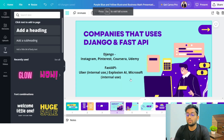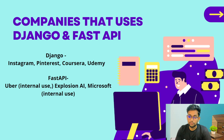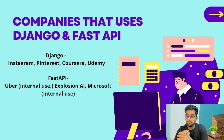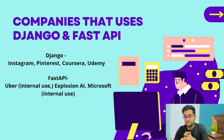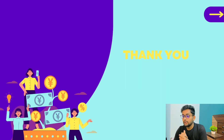Now let's look at the companies that use Django and FastAPI. For Django, we all know that Instagram uses Django — it's very scalable. Pinterest, Coursera, and Udemy also use Django. These are great companies. For FastAPI, Uber uses it internally, and Microsoft also uses FastAPI internally.